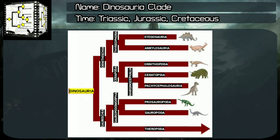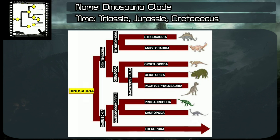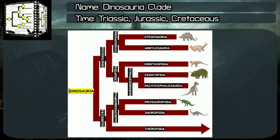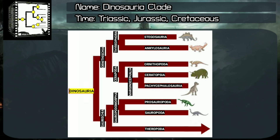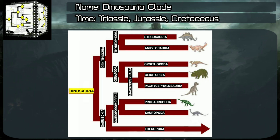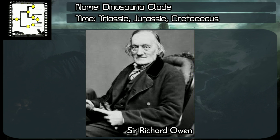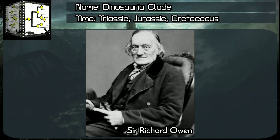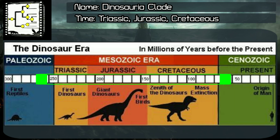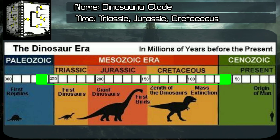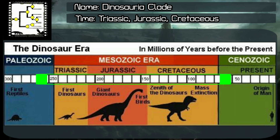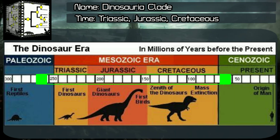Major dinosaur groups: all dinosaurs are included inside the Dinosauria clade. The main group, Dinosauria clade, classified by Sir Richard Owen, year 1842. Time range: Phanerozoic Aeon, Mesozoic Era, Triassic, Jurassic and Cretaceous Periods, something around 250 to 66 million years ago.